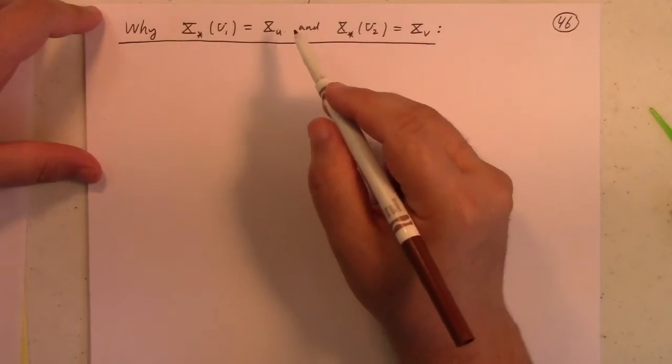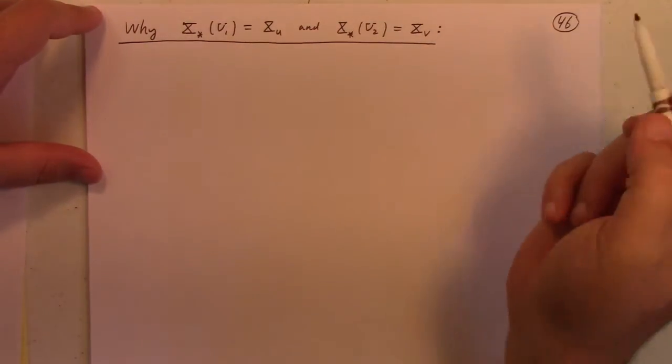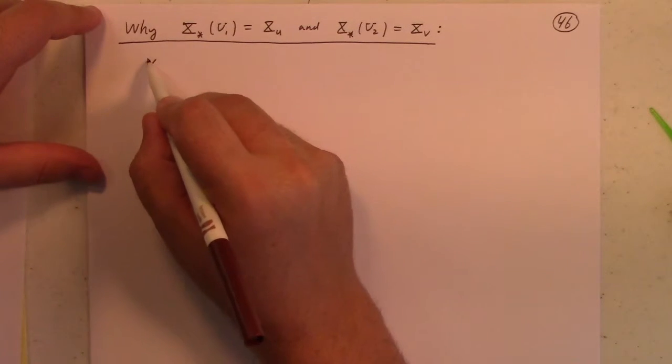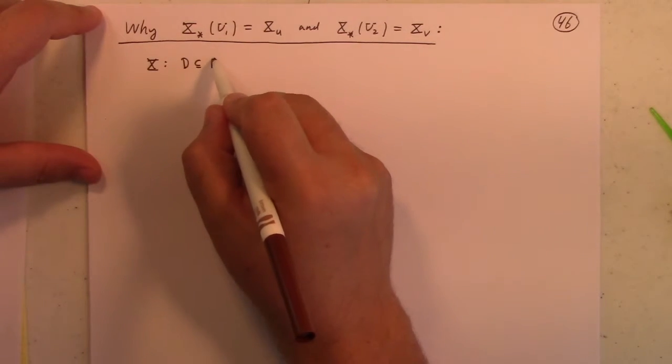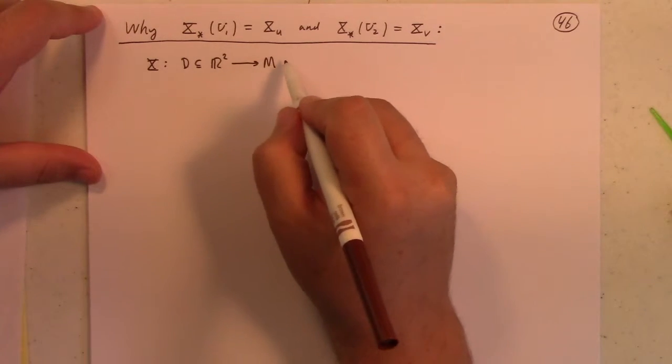There's a lot of potential for confusion here because I'm using U1 and U2 as the Cartesian frame on R2. Here we are assuming that X is a patch, again, from some open set of R2 to the surface in R3.